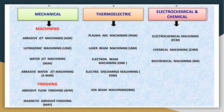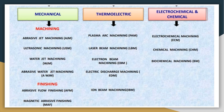The second group is the thermoelectric group, which includes electric discharge machining (EDM), plasma arc machining, laser beam machining, and ion beam machining. The third group consists of chemical and electrochemical machining processes — chemical machining, photochemical machining (PCM), and electrochemical machining (ECM).